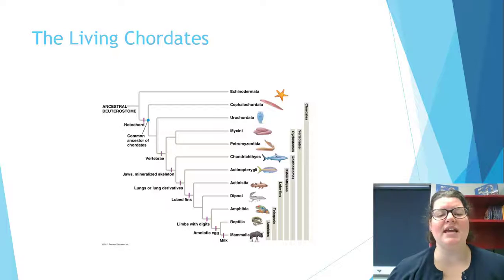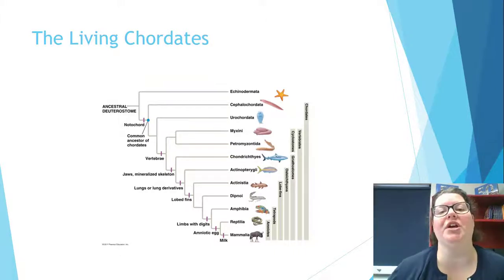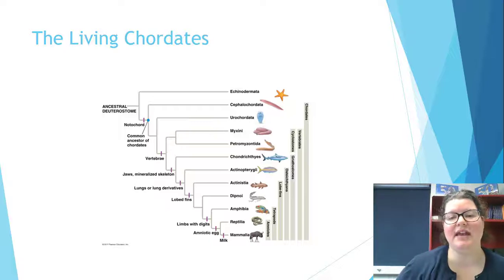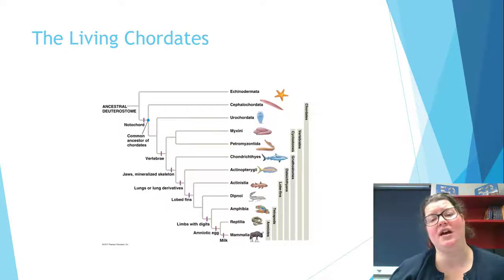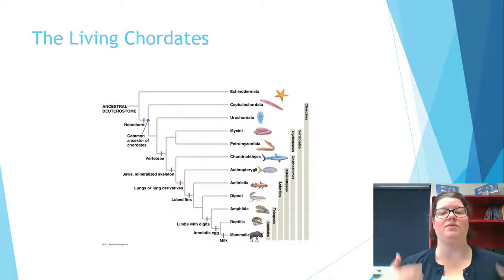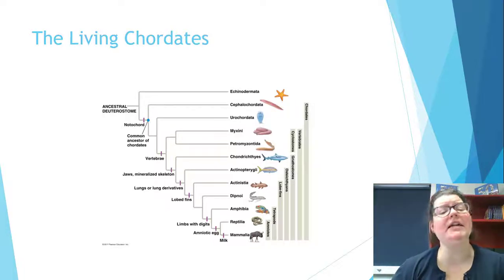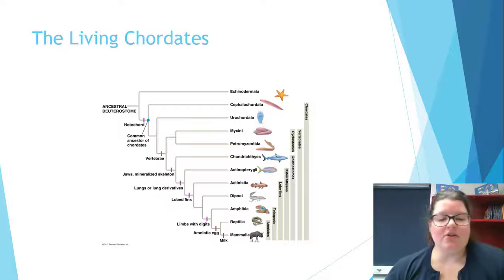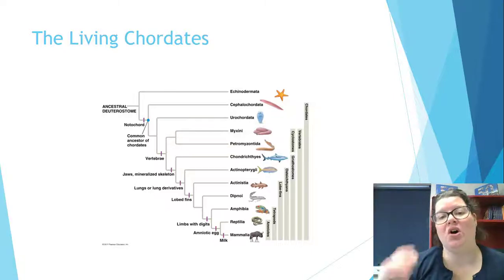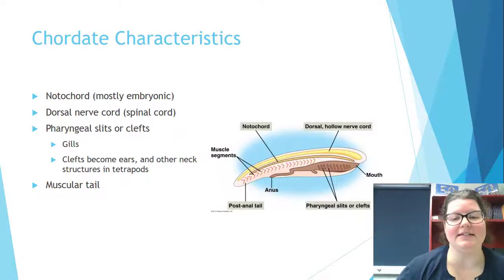Looking at the basal lineage on your screen, you get an ancestral deuterostome — something resembling a starfish. Chordata includes things like sea squirts, which are very interesting but don't have true vertebrae. True vertebrae are reserved for you, sharks, and similar animals. Reading the cladogram, each slash — the notochord, vertebrae, jaws, lungs, lobed fins, digits with limbs — represents a node showing common shared characteristics.